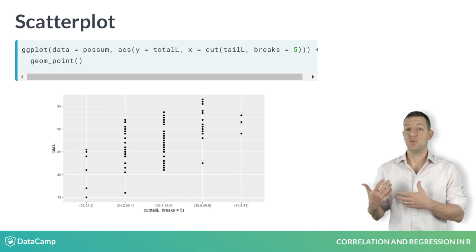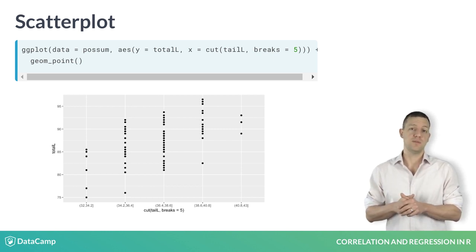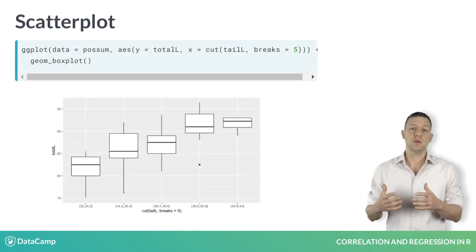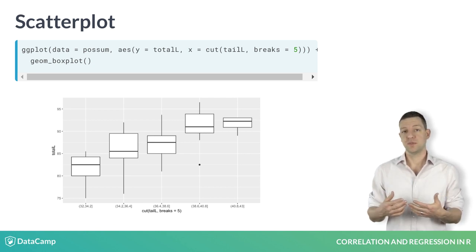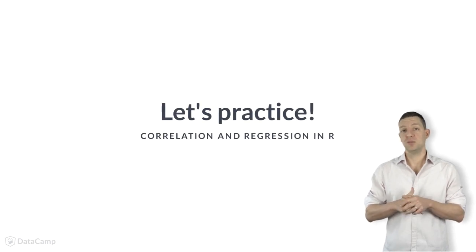Here, we use five breaks to separate the possums into five groups based on their tail length. Finally, we change to geom_boxplot to make the boxes. Note how the median body length increases as the tail length increases across the five groups. Now it's time for you to get some practice making scatter plots.